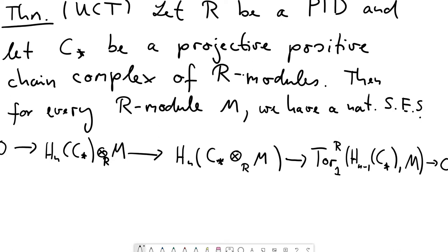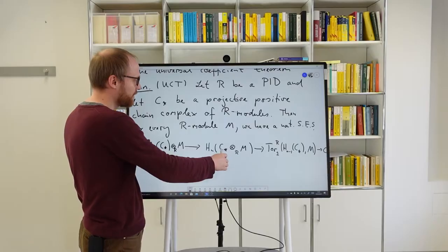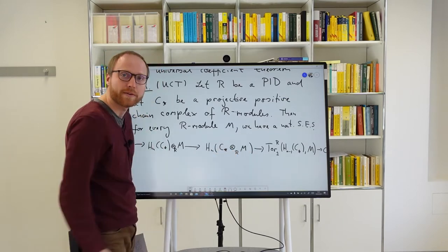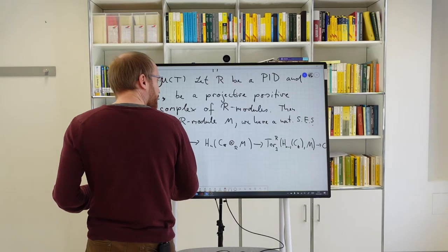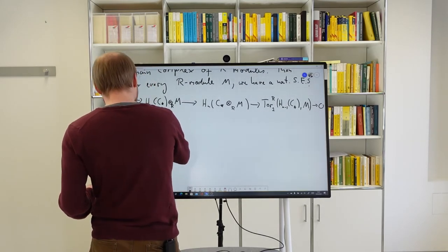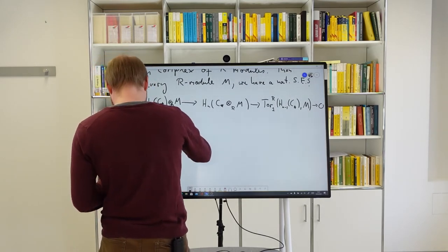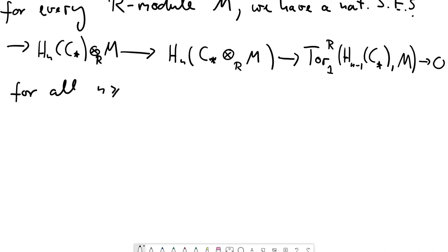This theorem is actually quite a bit stronger than this, because it additionally says that these are split exact sequences. One does not have to solve some extension problem to find out what the middle module is — the middle module is actually the direct sum of the outer two modules. The short exact sequence exists for all n ≥ 0, and the sequence splits.